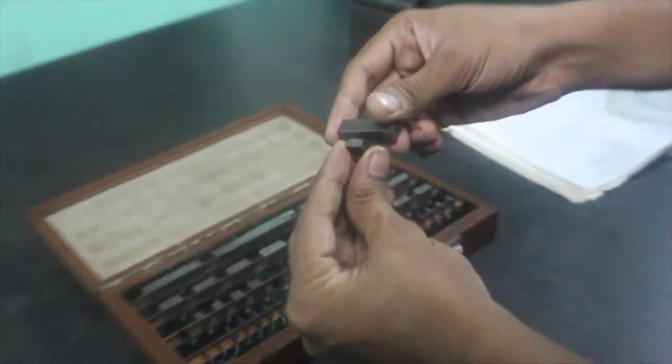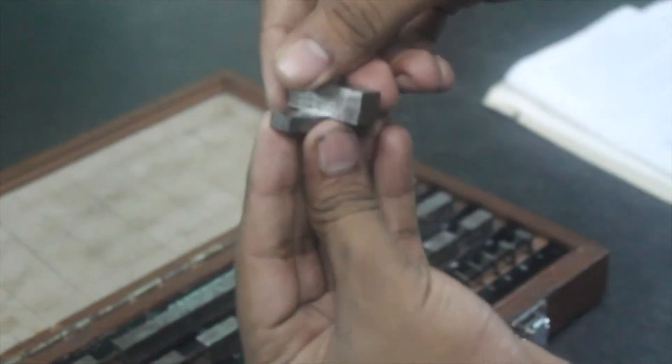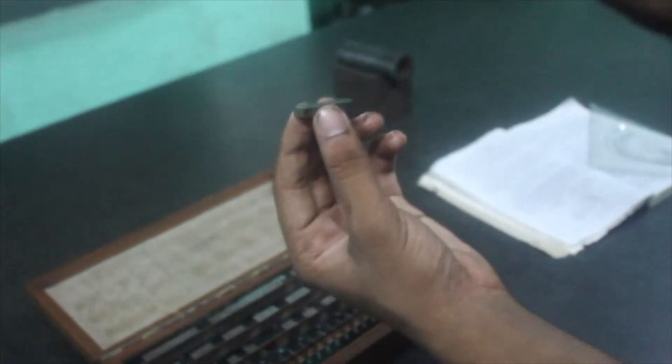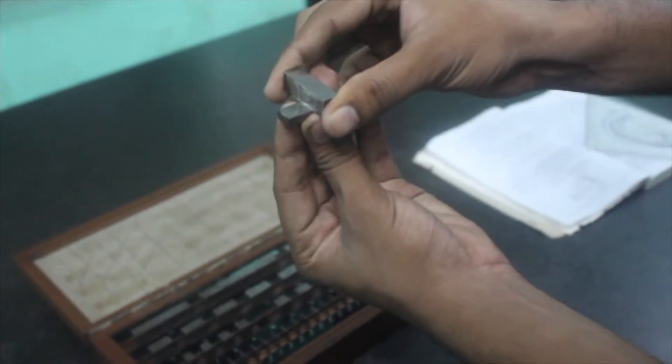These two blocks will be kept in a cross position, somewhat like this. Be sure that the flat surfaces are being kept in cross position.